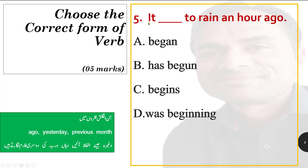Option number 5: it dash to rain an hour ago. When a sentence contains 'ago', 'yesterday', or 'previous month', the second form of verb is used. So the answer is: it began to rain an hour ago — 'began' is the second form of 'begin'. It began to rain an hour ago.